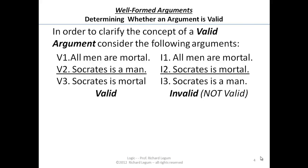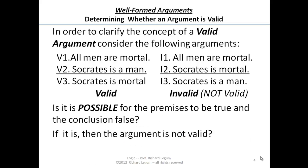And now how do you determine that? How do you figure it out in general? If you remember what the definition of validity told us, you're going to be able to do it. The definition of validity said it's impossible for those premises to be true and the conclusion false. So if you want to test an argument for validity, ask yourself: is it possible for the premises to be true and the conclusion false?